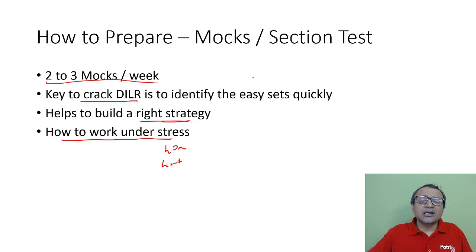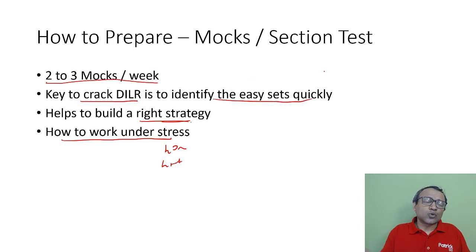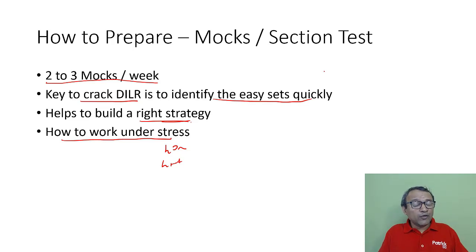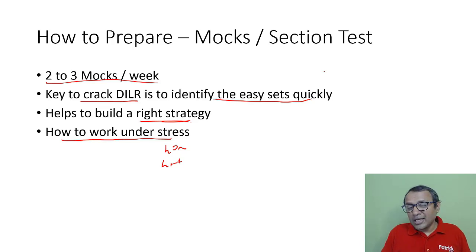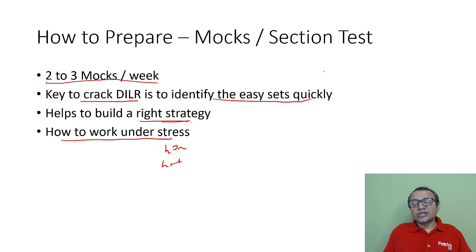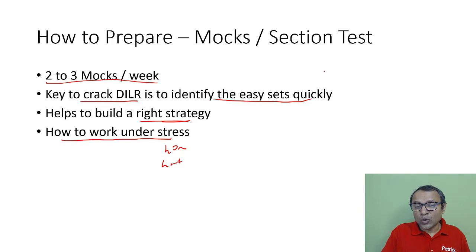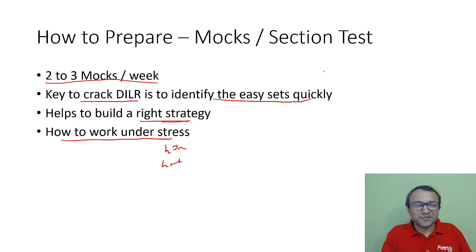The key to crack DILR is to identify easy sets and solve them quickly. Even in CAT 22, if you solved one full set correctly, you would have got a 90 percentile. So the key is to identify easy sets and solve them. The tough sets will be very tough, but easy sets will be solvable. Pick up the easy set and go about solving it.